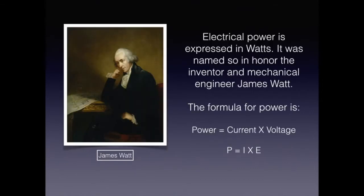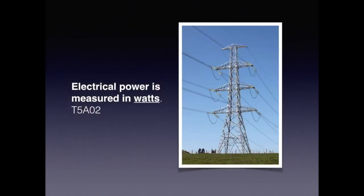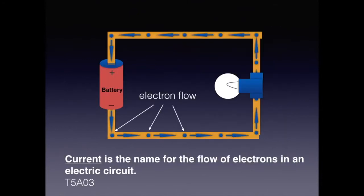James Watt was a mechanical engineer and inventor who had the expression of electrical power named after him. Power, P, can be calculated by multiplying voltage, E, times current, I. In other words, P equals I times E. For the exam, understand that electrical power is expressed or measured in watts. Also for the exam, know that current is the name for the flow of electrons in an electric circuit.